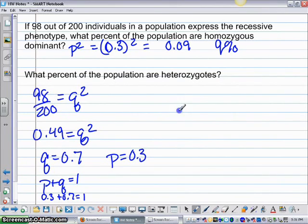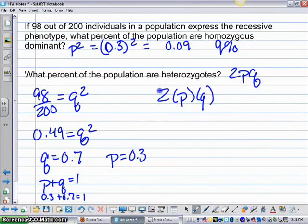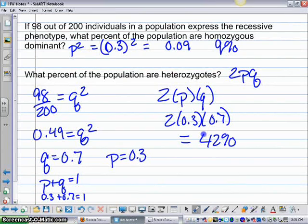And then what percentage are heterozygotes? That's 2PQ. So I'm going to take 2 times P times Q, which is 2 times 0.3 times 0.7, and that's going to equal 42% heterozygotes for 2PQ.